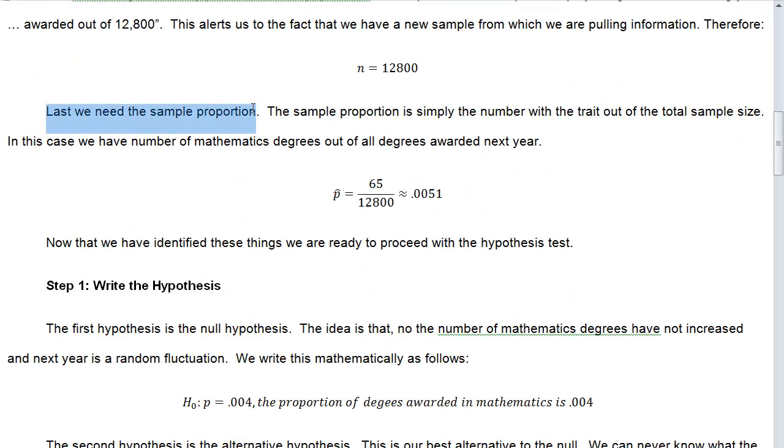Last, we need the sample proportion. The sample proportion is simply the number with the trait out of the total sample size. Our P hat is equal to 65 mathematics degrees out of 12,800, converted to a proportion is 0.0051. Now we have identified these things and we are ready to proceed with the hypothesis test.